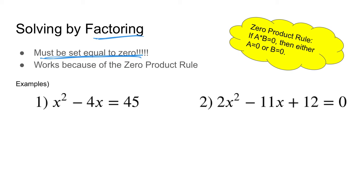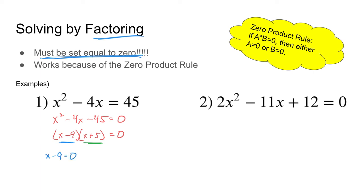With number 1, it's not set equal to 0, so we need to do that first. Subtract 45 from both sides — it's now set equal to 0. Now go into factor mode: look for the pair of numbers that multiplies to give negative 45 and adds to give negative 4. That's negative 9 and positive 5. Factor the quadratic, then take each individual factor and set it equal to 0. Set x minus 9 equal to 0 and x plus 5 equal to 0, then solve these equations independently. You get two different x values — these are the actual solutions to the quadratic equation.